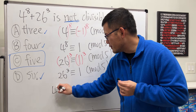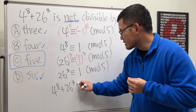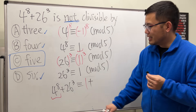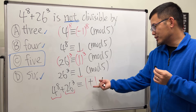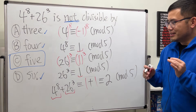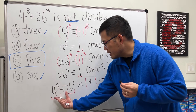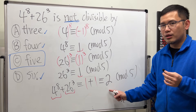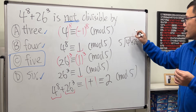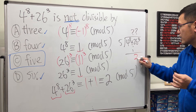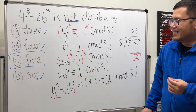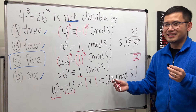Combining the results: 4 to the 8th plus 26 to the 3rd is congruent to 1 plus 1, which equals 2 mod 5. Since this is not equal to 0, when you divide the expression by 5, you get a remainder of 2 — so this number is not divisible by 5. That's the answer. I haven't done this for a long time, so it was very fun. Hopefully this is clear!